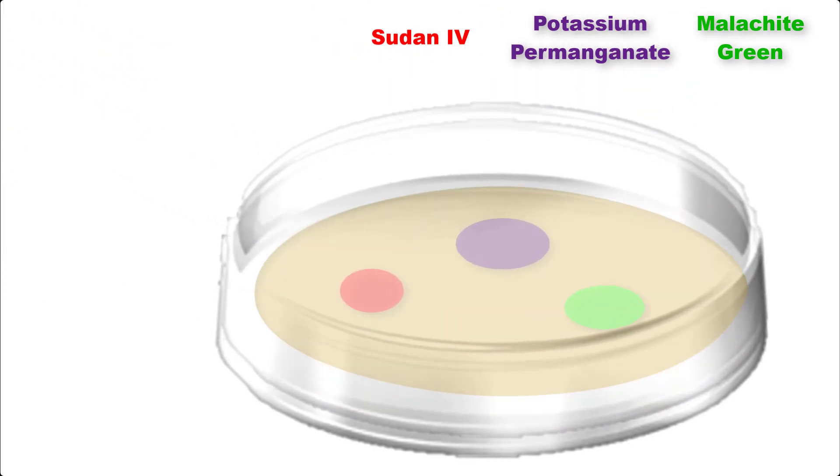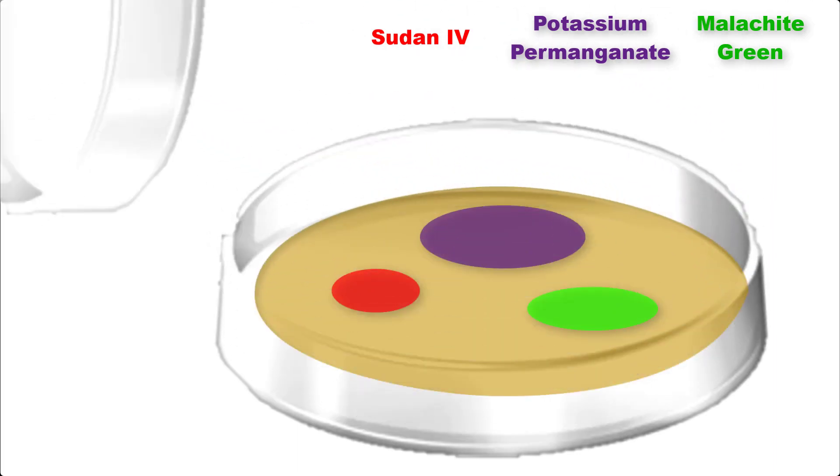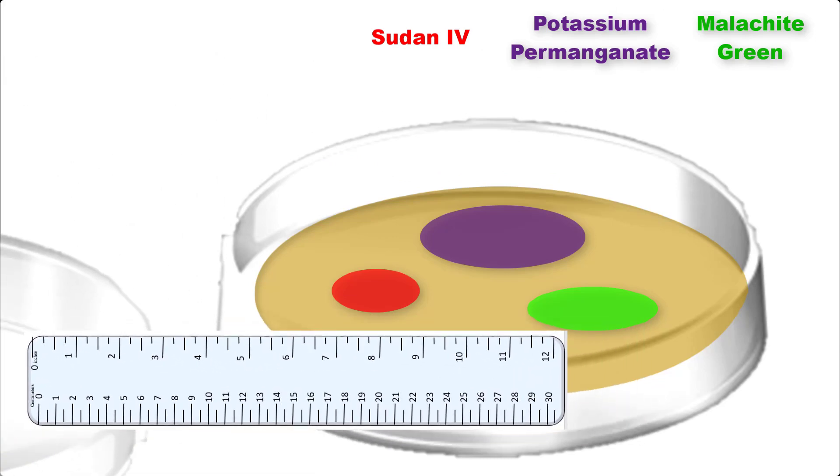60 minutes later, let's suppose your petri plate looks like this. Now, we can take a ruler and measure the diameter in millimeters for each of our spots.